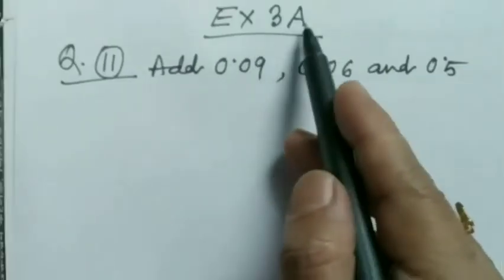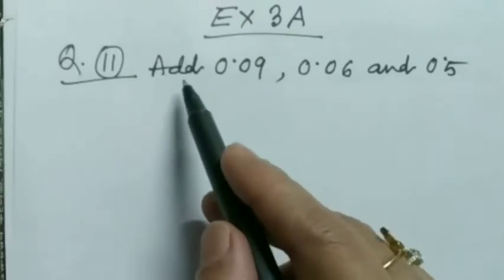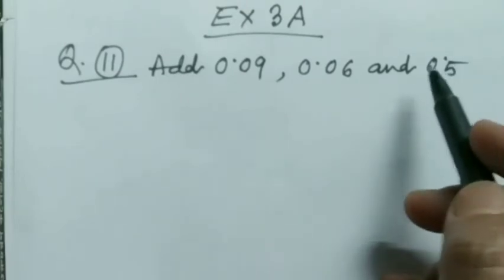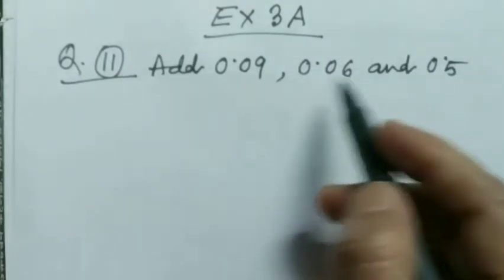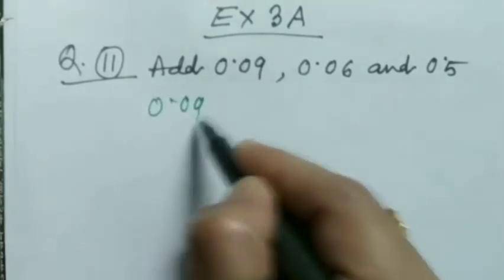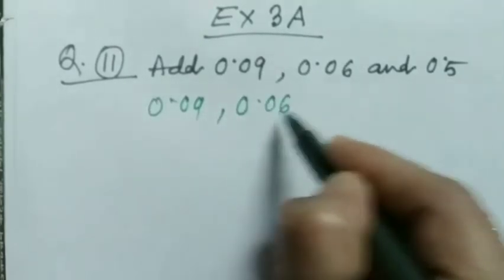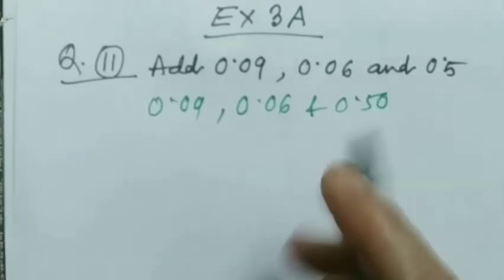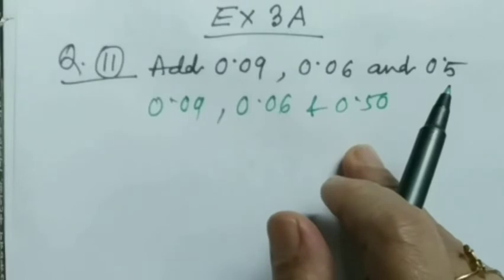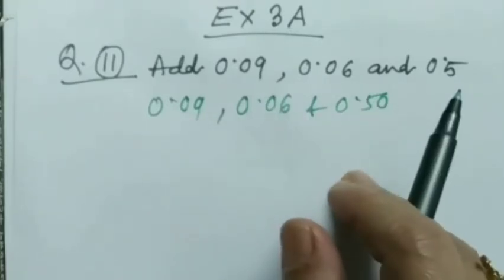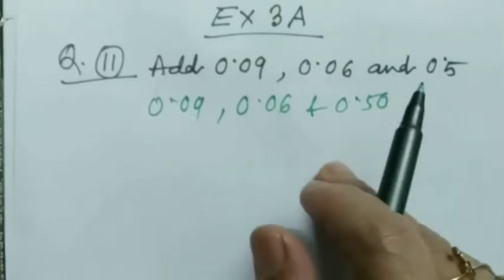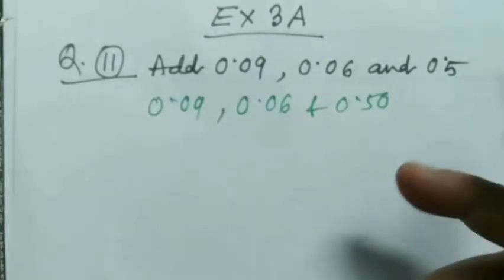Exercise 3A, question number 11: add 0.09, 0.06, and 0.5. Now converting them into like decimals we are getting 0.09, 0.06, and 0.50.